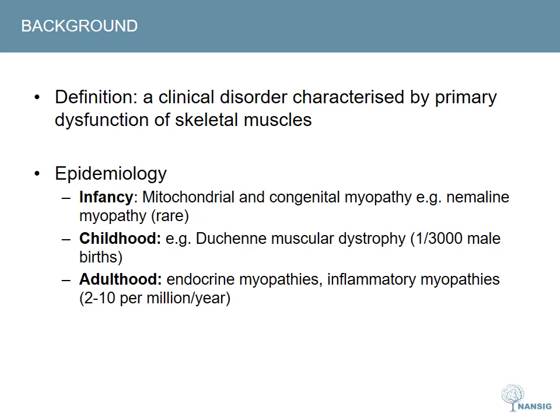The most common childhood onset myopathy is that of Duchenne muscular dystrophy. Childhood onset myopathies tend to have slower progression and more chronic causes when compared to adult onset myopathies. Thyroid disorders and excessive steroid use are among the most common non-inflammatory causes in adults. However, inflammatory causes are important differentials in older patients.